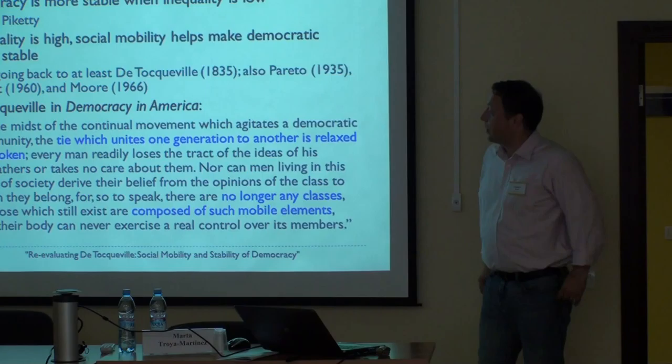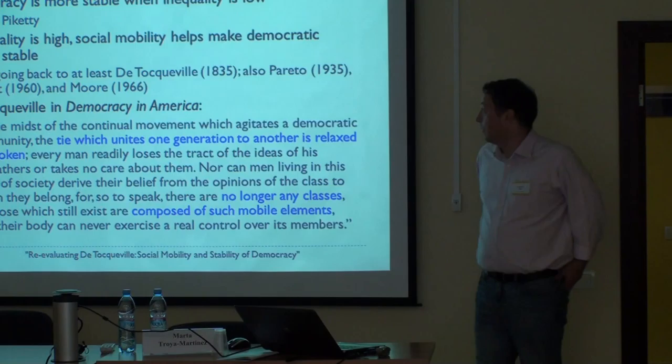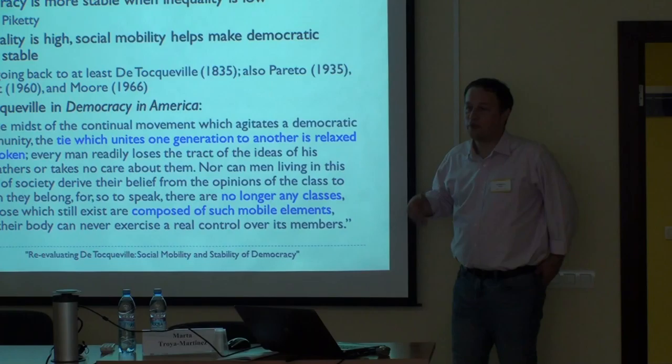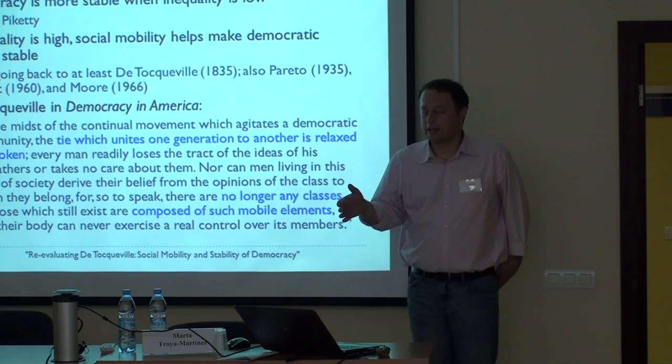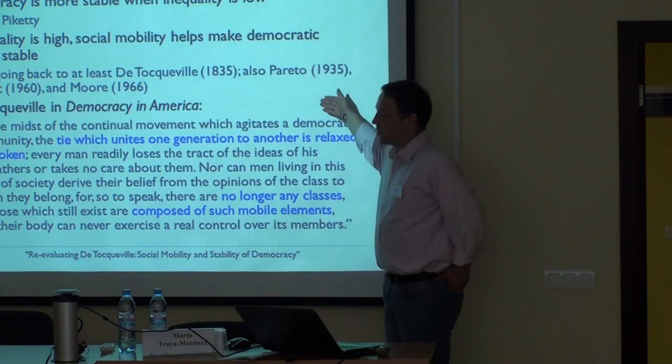When I was writing this paper, I reread what Tocqueville wrote, and again it's very hard to understand what he's talking about. But there were much more clear people like Wilfredo Pareto, Seymour Lipset, and Barrington Moore, who read Tocqueville and formulated the Tocqueville Hypothesis: that social mobility is something that makes democracy stable in a highly heterogeneous society.